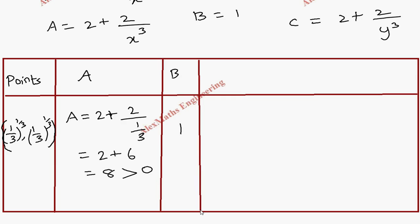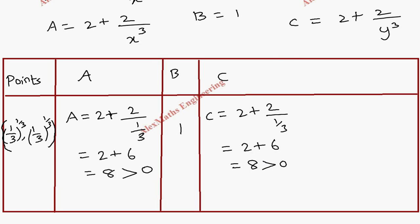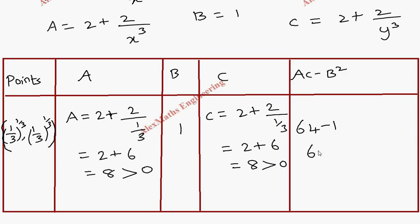B = 1. For C, similarly substituting y³ = 1/3 gives C = 2 + 2/(1/3) = 2 + 6 = 8, which is greater than 0. Now AC − B² = 8 × 8 − 1² = 64 − 1 = 63, which is greater than 0. Since AC − B² > 0 and A > 0, we conclude this is a minimum point.